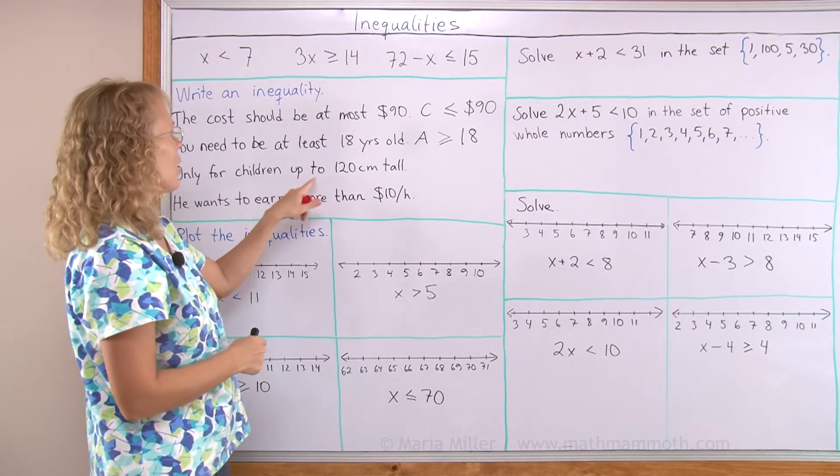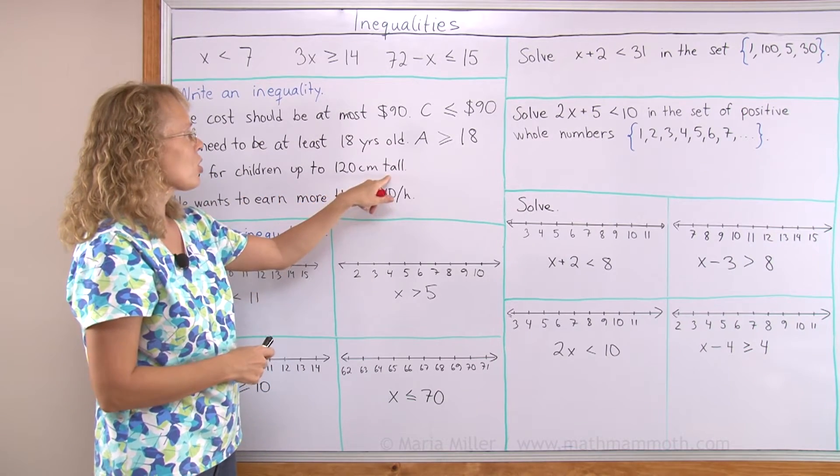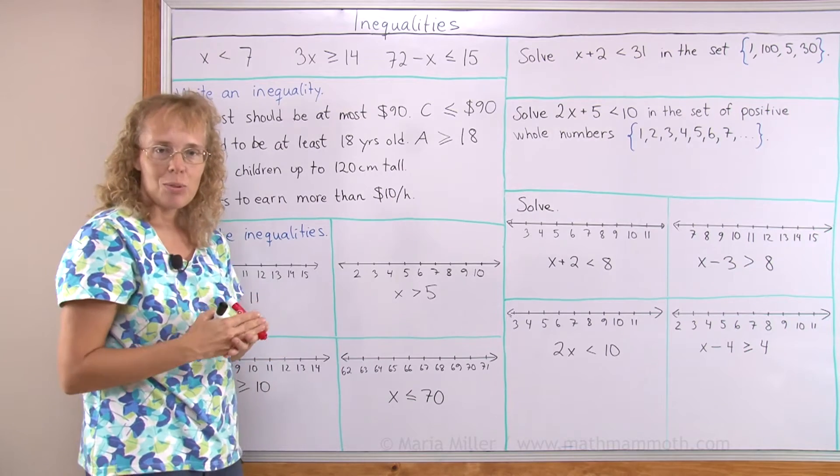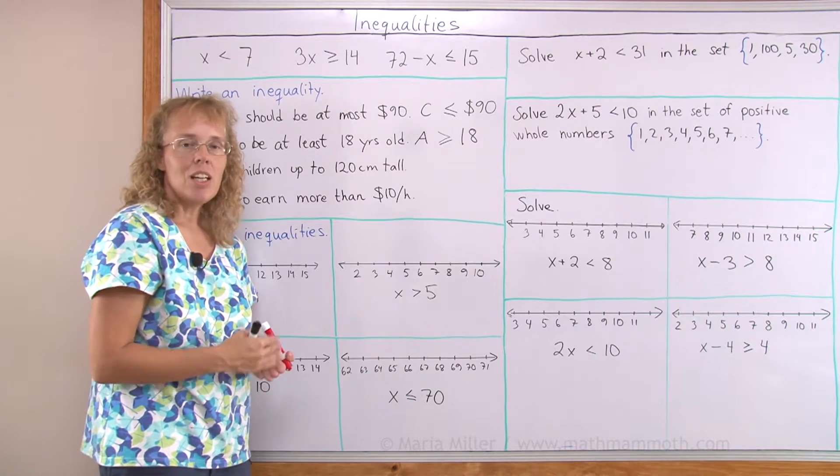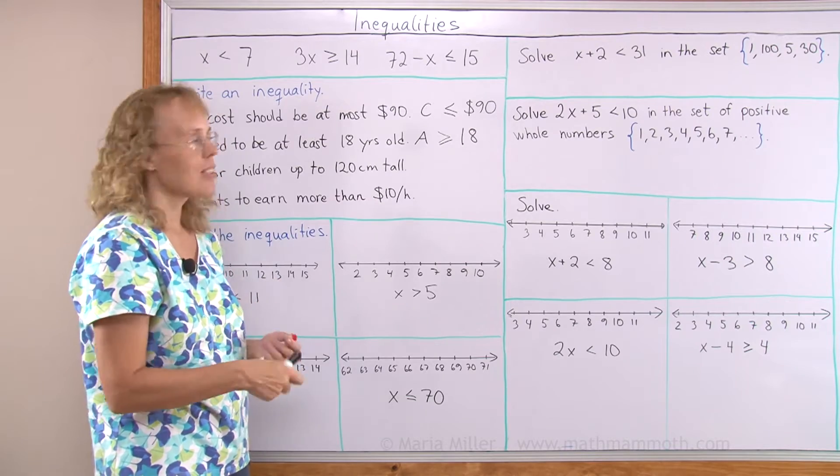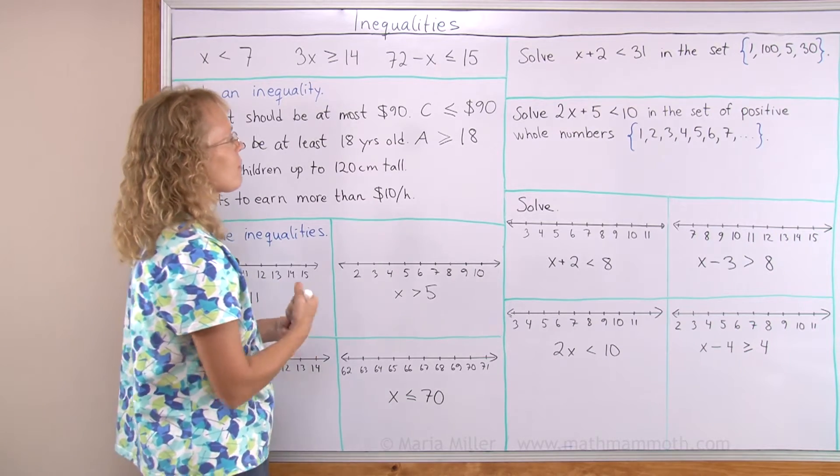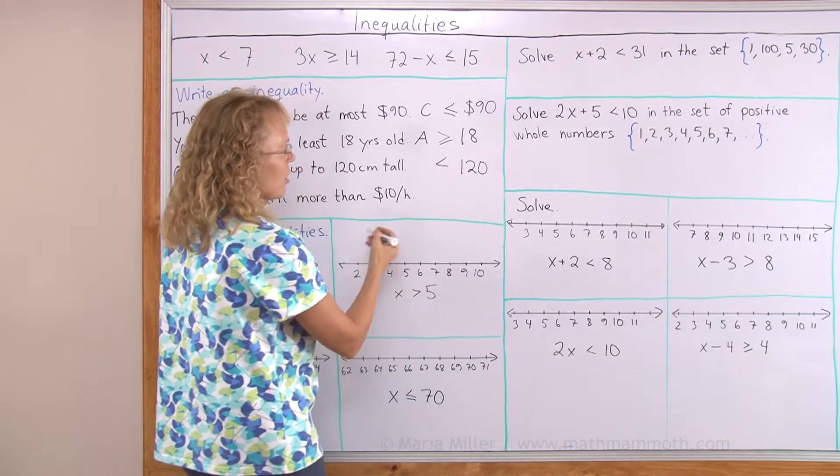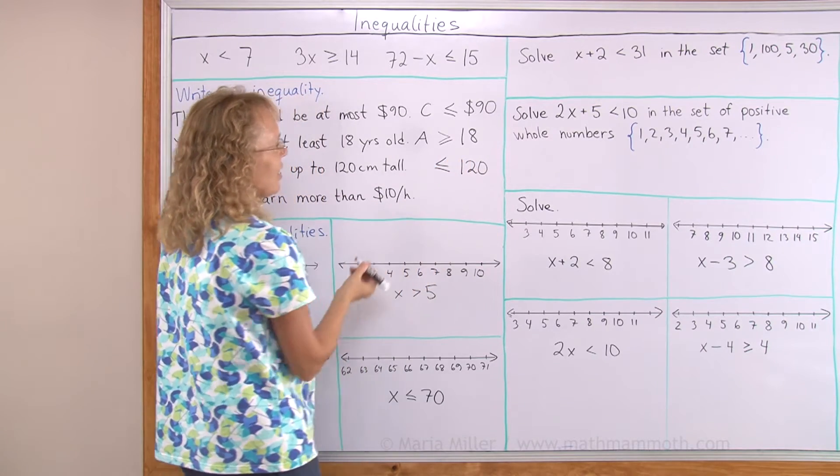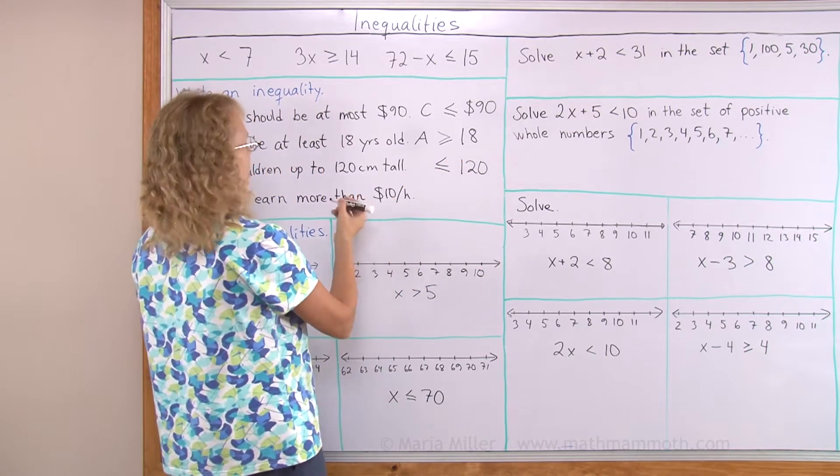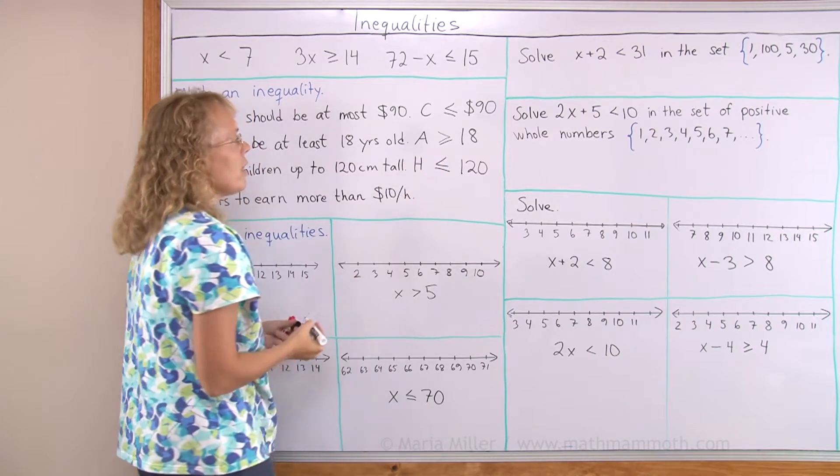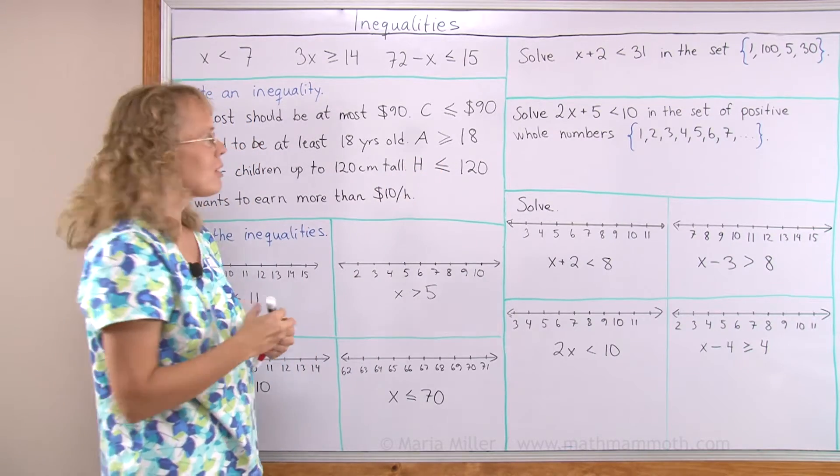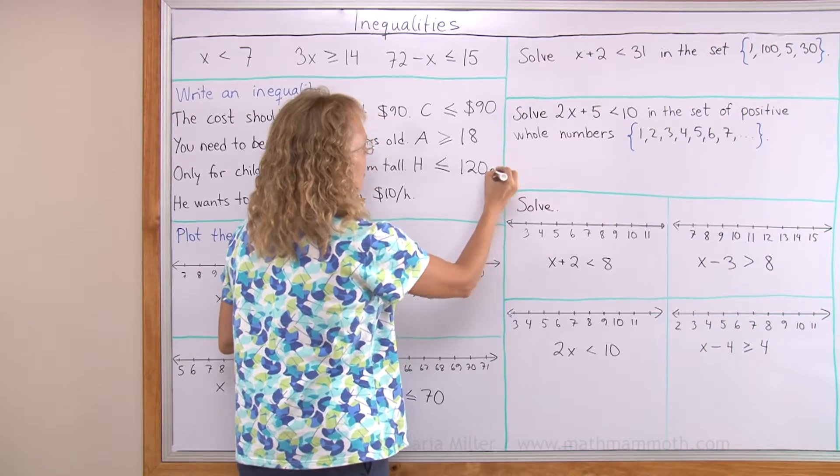Only for children up to 120 centimeters tall. So the child has to be less than 120 centimeters or the child could be exactly 120 centimeters. So the child has to be less or the child could be exactly equal to. And this is about their height. So let's put H. Height less than or equal to 120 centimeters.